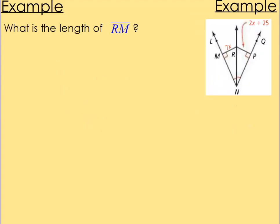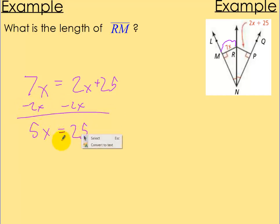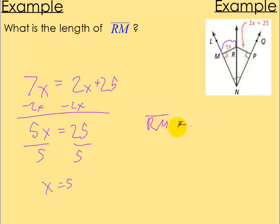Next one. What's the length of RM? RM is the 7x side. This is the angle bisector theorem, where those two sides are congruent to each other. So 7x equals 2x plus 25. Solving for x: subtract 2x on both sides to get 5x equals 25, then divide by 5 to get x equals 5. But that's not it — the side length is 7x, so RM equals 7 times 5, which is 35.